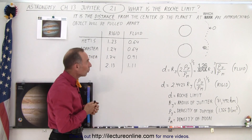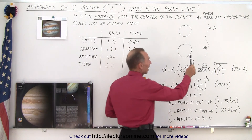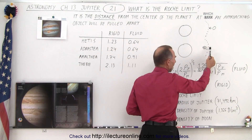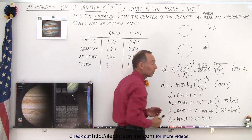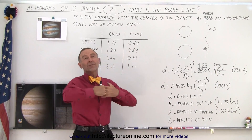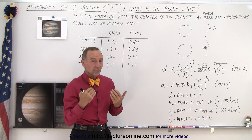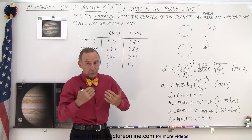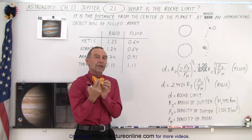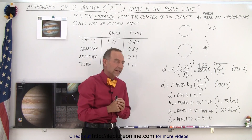What we can then see is that if an object is outside the Roche limit, it will stay intact, but if it somehow ventures inside the Roche limit, the tidal forces will simply shred that object to pieces, and we believe those pieces would potentially form a ring, depending upon how that object approaches the planet.